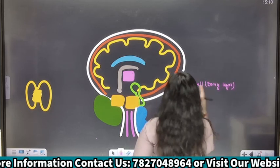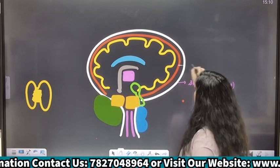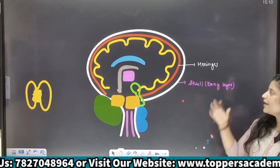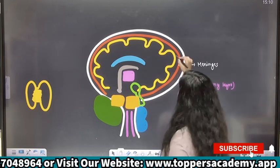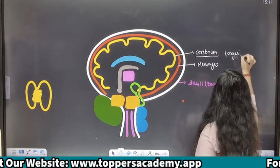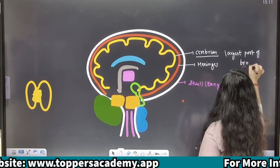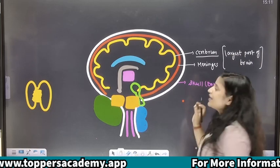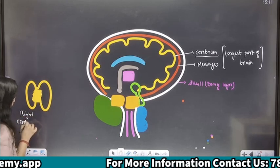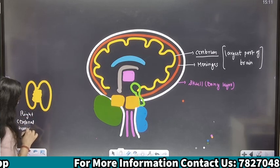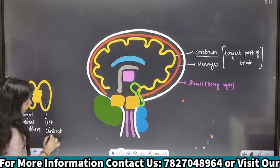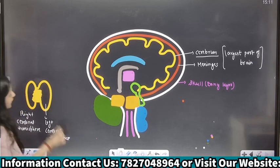Aapka brain skull se protected hai. Phir jo second layer hai woh meninges ki hai. So jo bhi ek neurosurgeon ko surgery perform karni hai, pehle woh skull ko open karega, then meninges ko open karega. Brain ka first part which is cerebrum — it is the largest part of brain, and hum bolte hain it is a seat of intelligence because it has millions of neurons. Yeh right cerebral hemisphere hai.